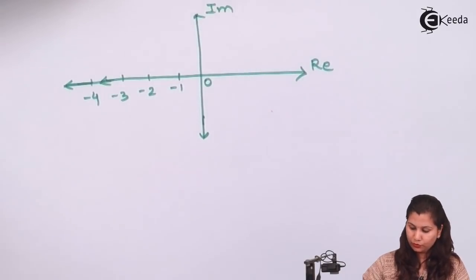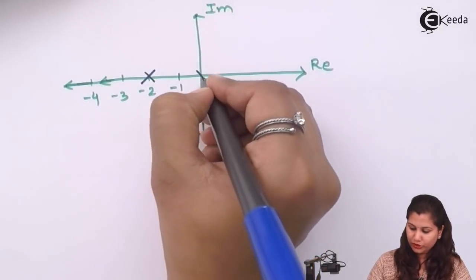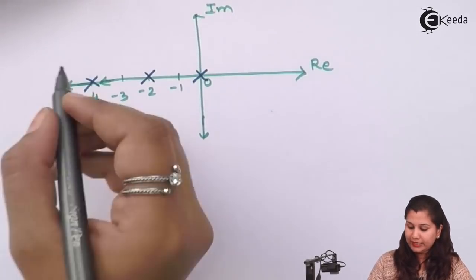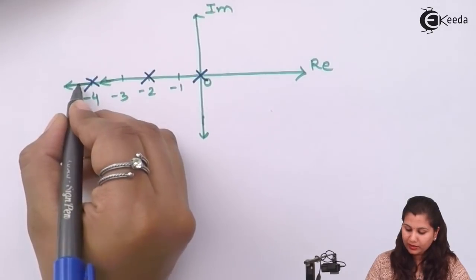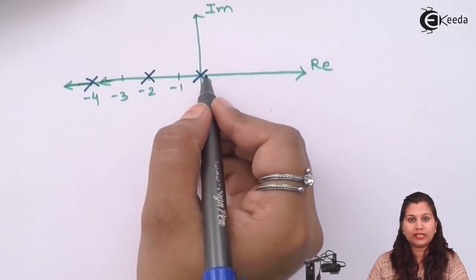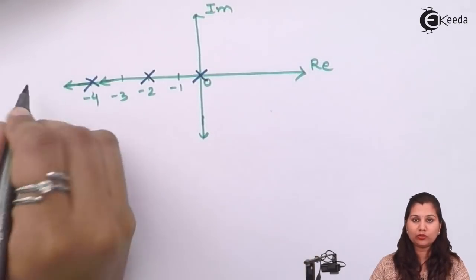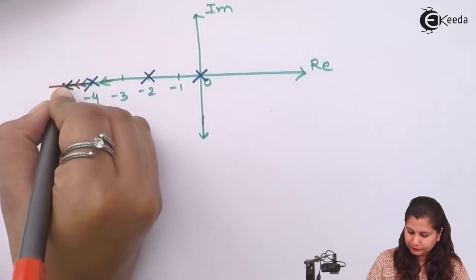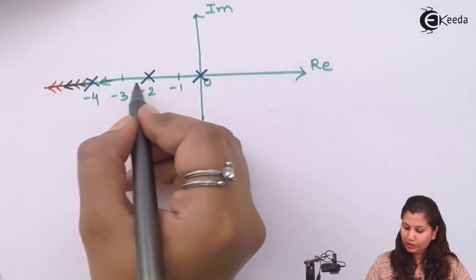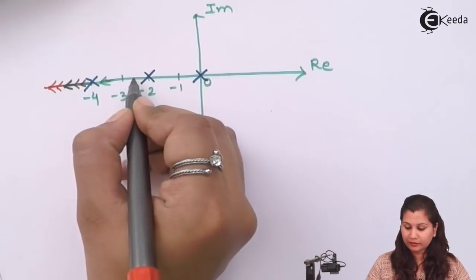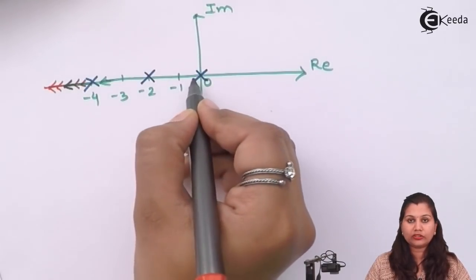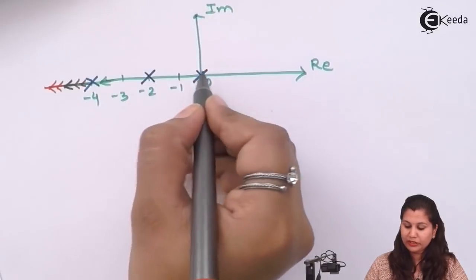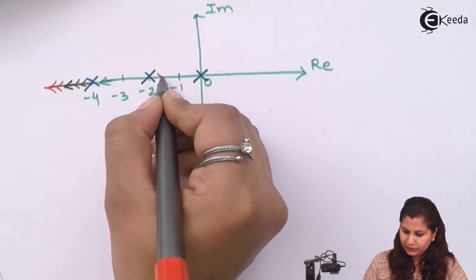So s equals to minus 2 is one pole, s equals to 0 is one pole, and s equals to minus 4 is another pole. Now take a point here. For this point the number of poles on the right hand side are 3, so it's an odd number, so the direction of root locus will be towards infinity. Now for minus 2, if we take a point here, then the number of poles on the right hand side will be 2, which is even, so the direction of root locus will be towards the origin.